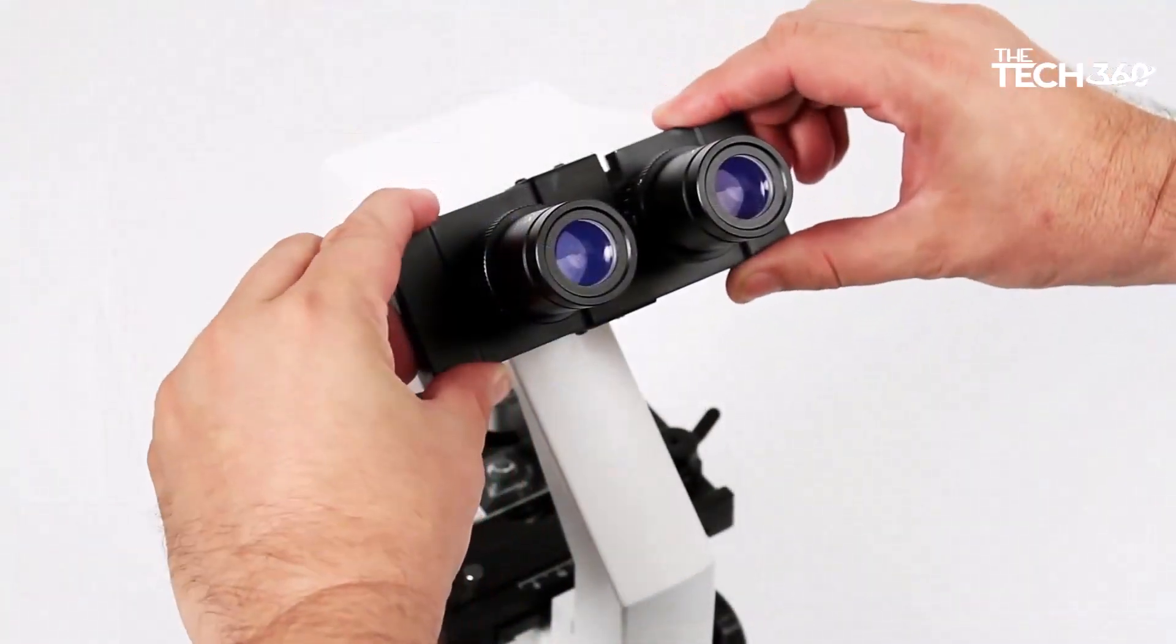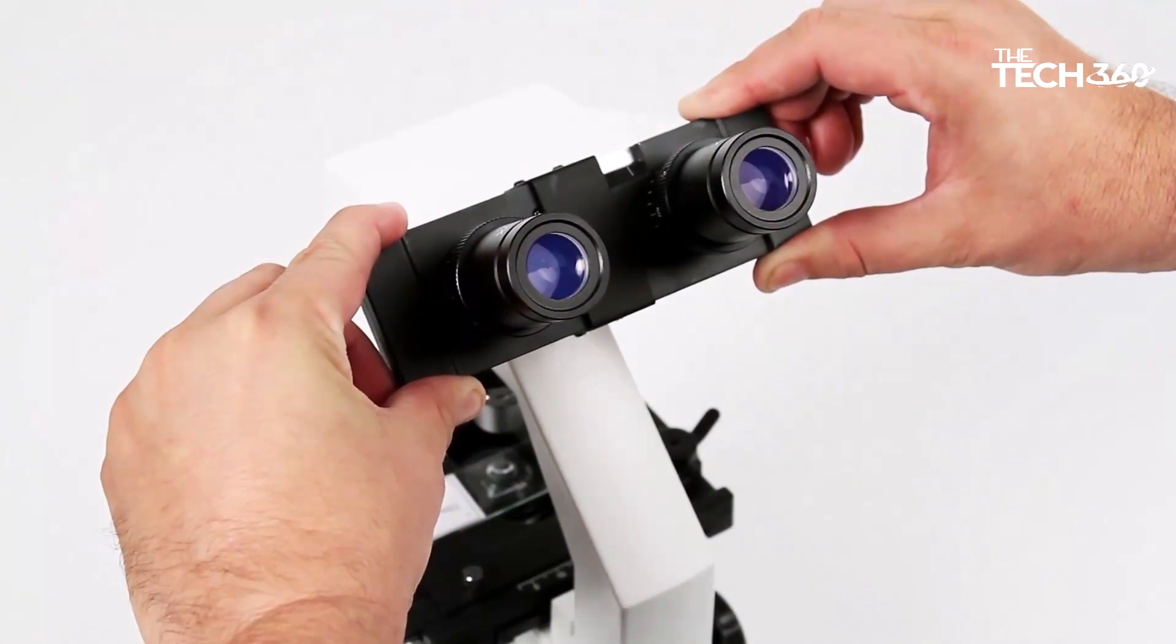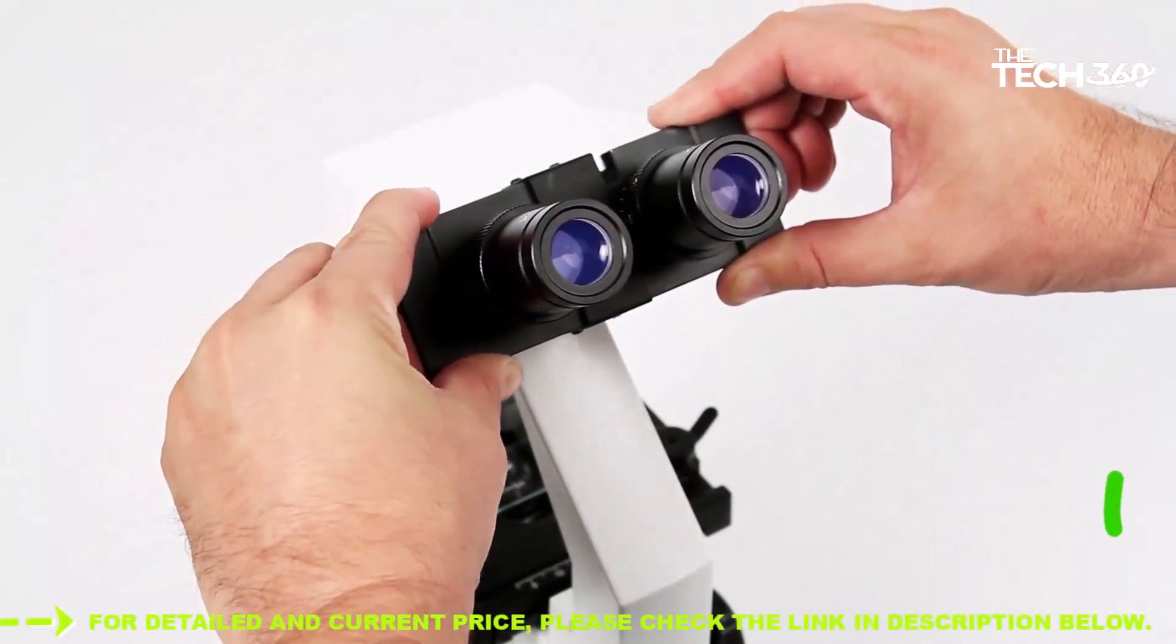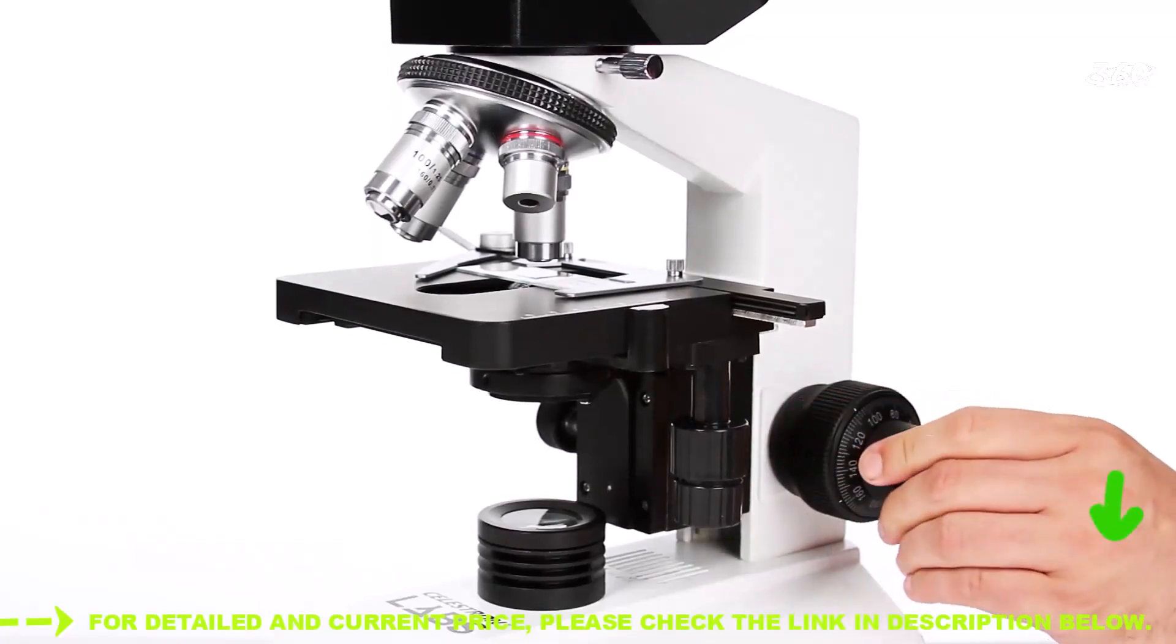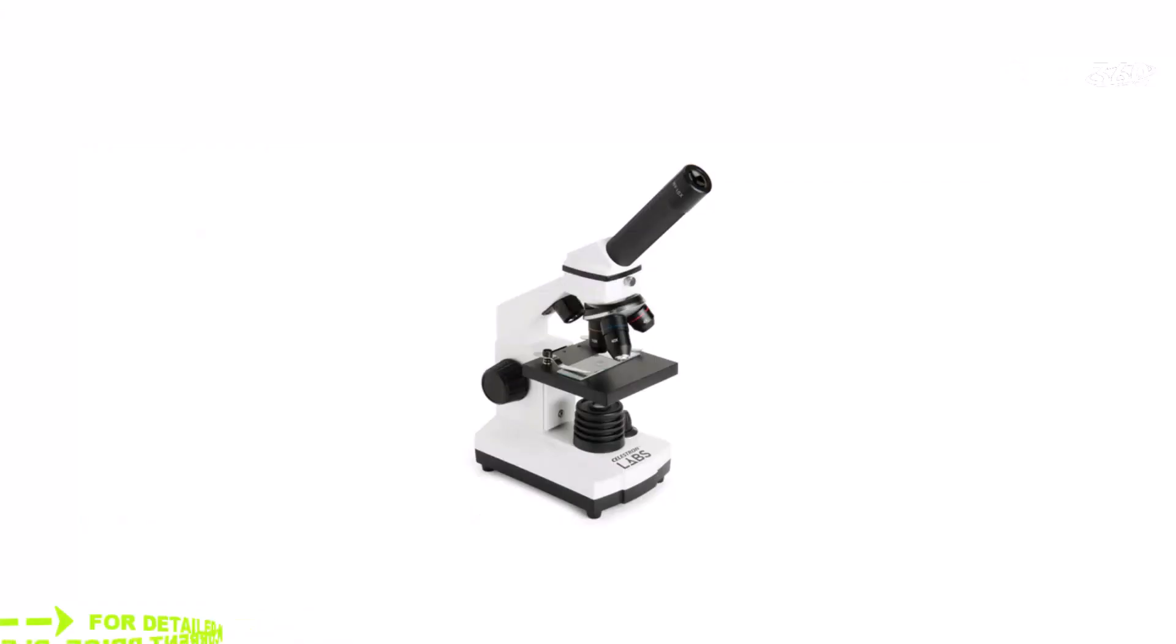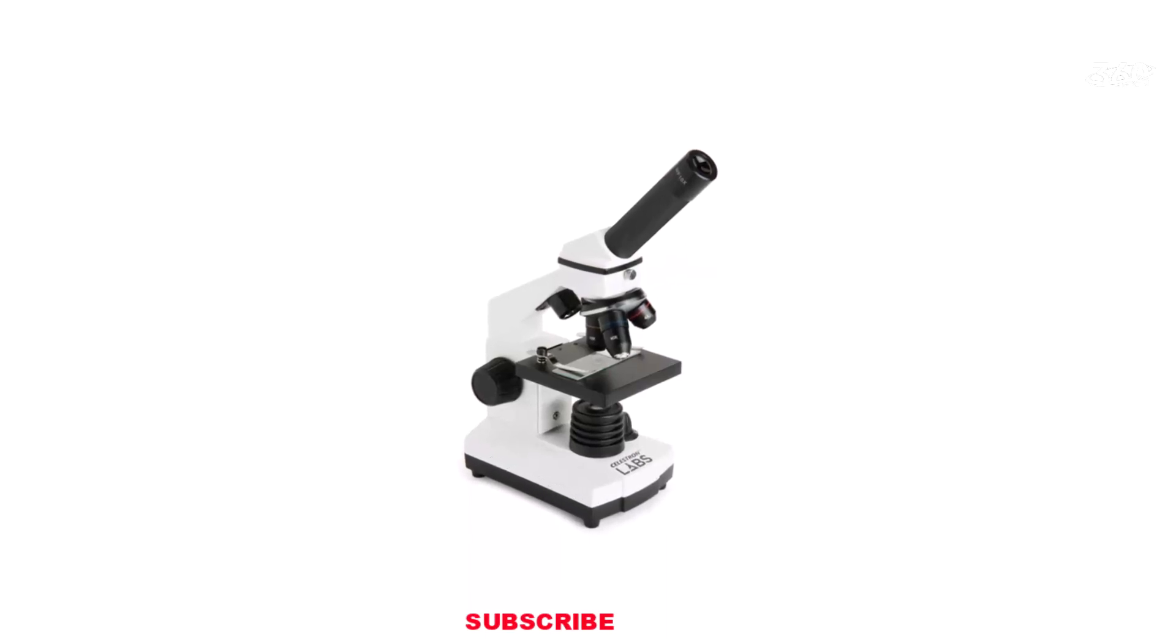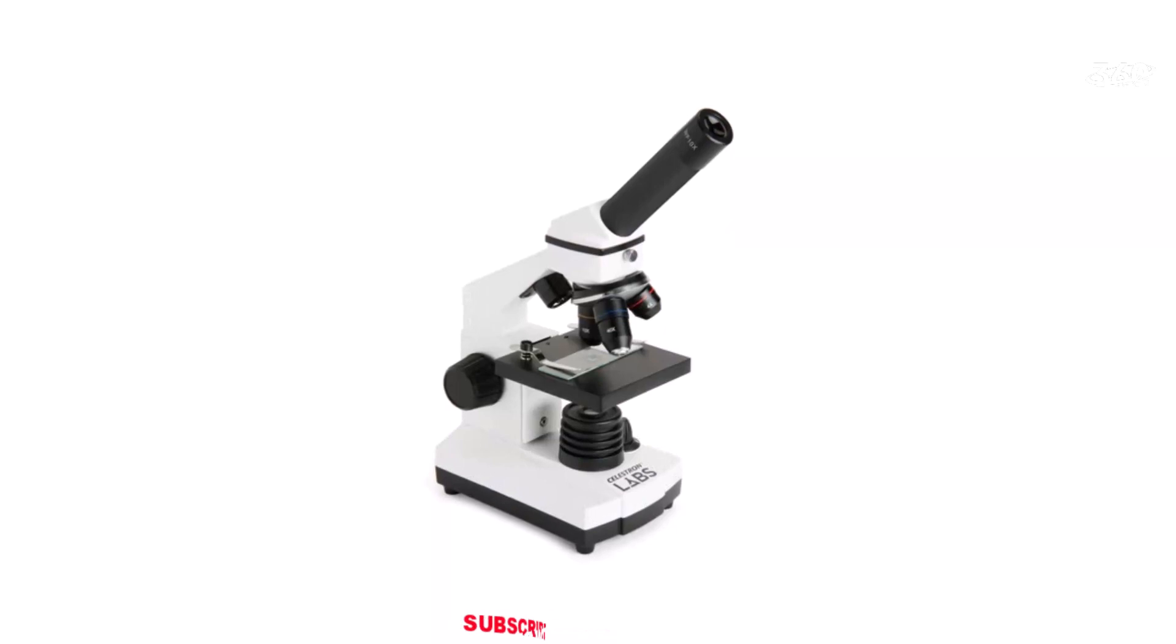The Celestron CM800 Compound Microscope is equipped with 10X and 20X eyepieces and 4X, 10X, and 40X objective lenses. This combination allows for a range of magnification levels, enabling you to view specimens at 40X, 100X, 250X, 400X, and an impressive 800X magnification.